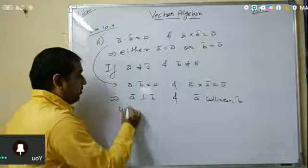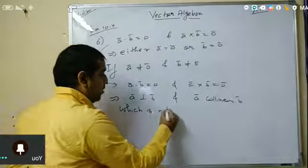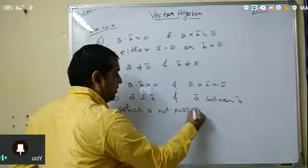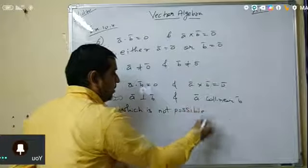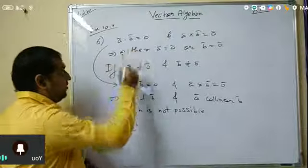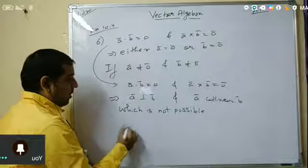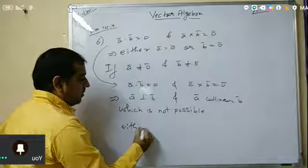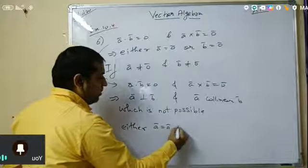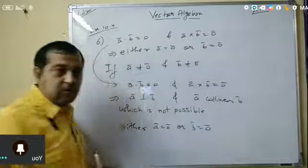This contradiction is not possible. Therefore, either vector a is the zero vector, or vector b is the zero vector.